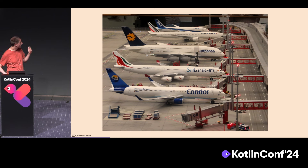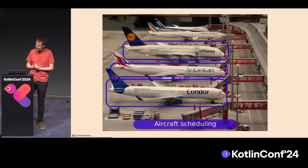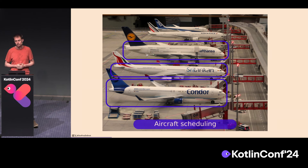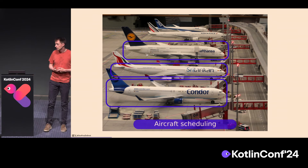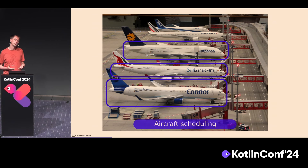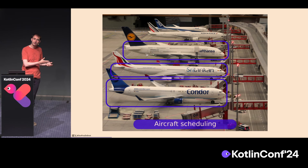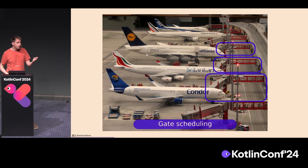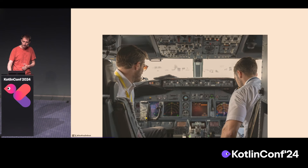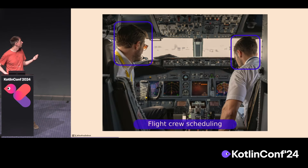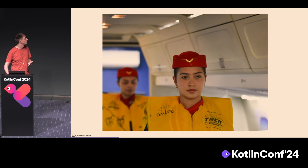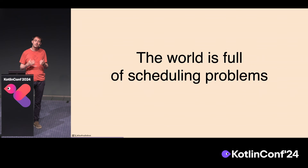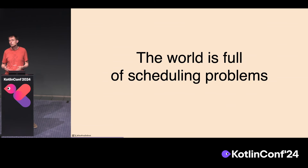Which plane actually does which flight? That's an aircraft scheduling problem — it depends on how many people are taking that flight, so when we can do it with a smaller plane, we want to do that. But if you fly a plane to the other side of the world, the next flight for that plane needs to leave from the other side. These planes need A and B maintenance every 48 hours or every eight days. Gate scheduling — another planning problem. And assigning pilots and stewards to flights is a flight crew scheduling problem. The world is really full of scheduling problems, and this is just one example.